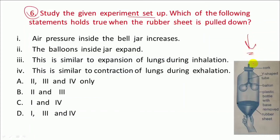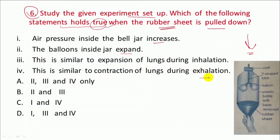This is Question 6: Study the given experiment set-up. Which of the following statements holds true when the rubber sheet is pulled down? If you pull down the rubber sheet, the answer is: air pressure inside the bell jar decreases, the balloon inside the jar expands, this is similar to expansion of lungs during inhalation, this is similar to contraction of lungs during exhalation.